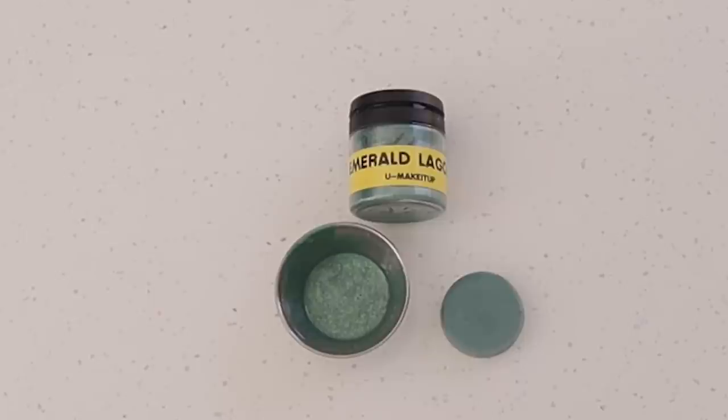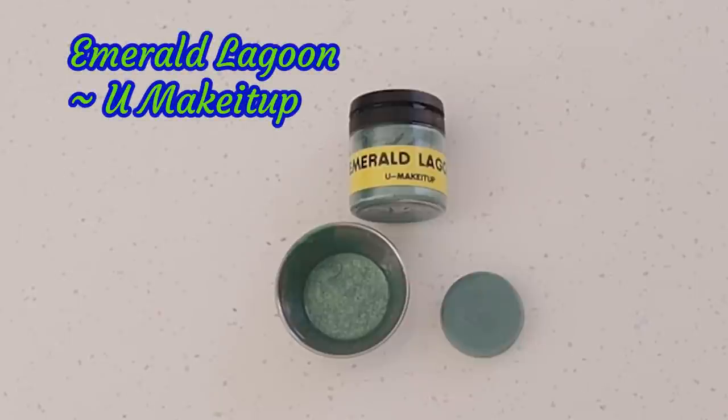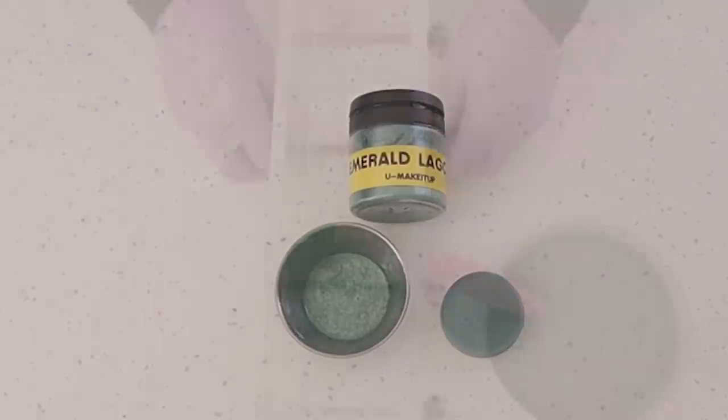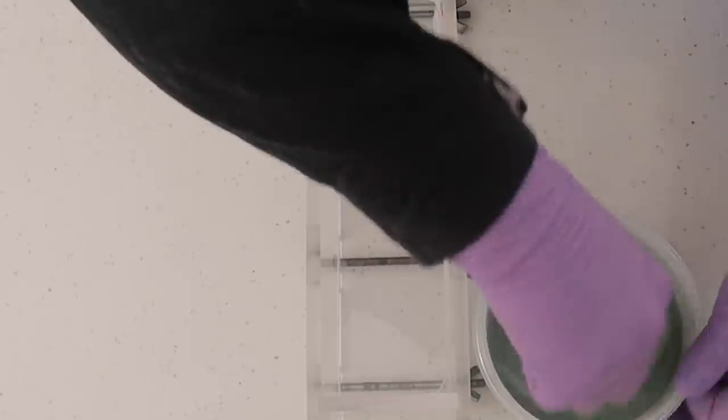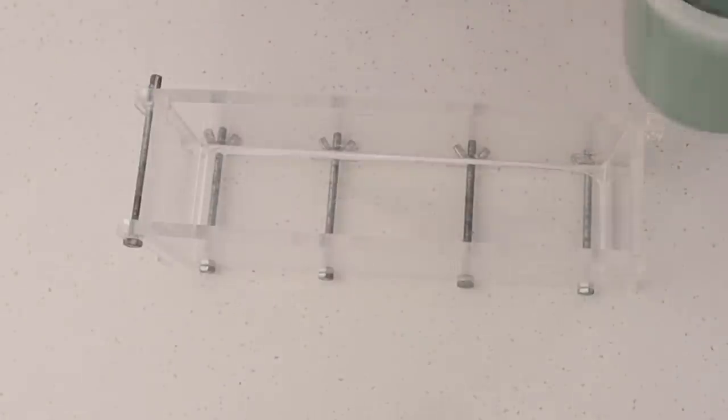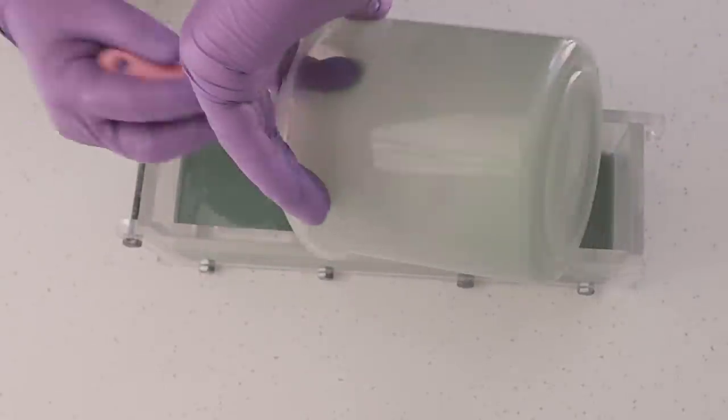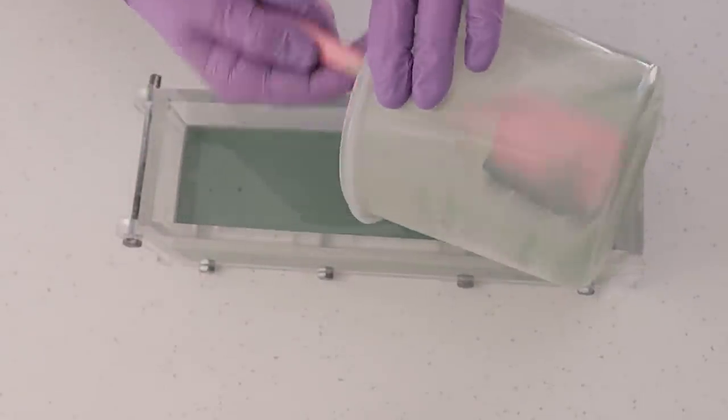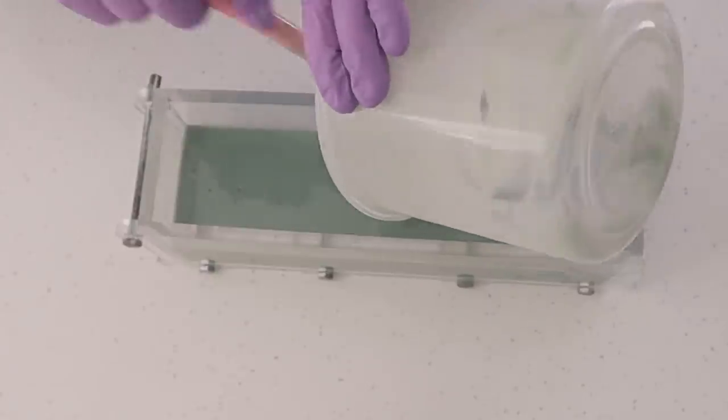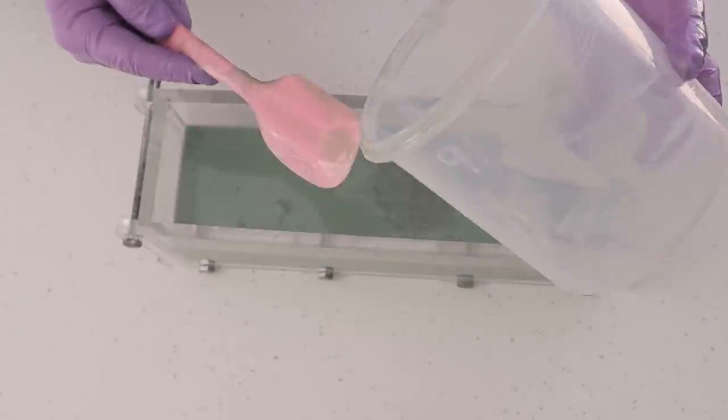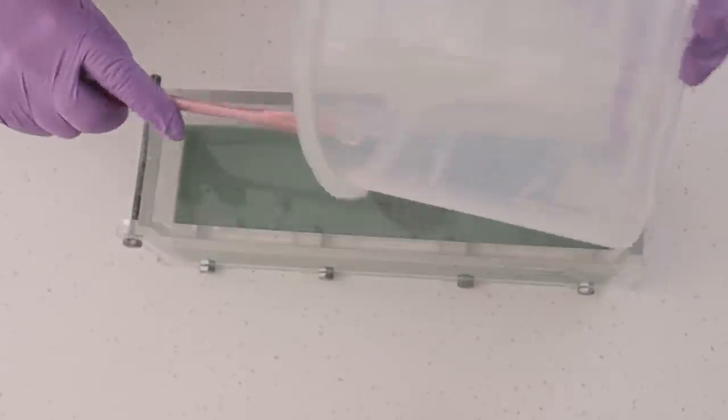For this soap I'm going to be making some embeds the day before I make the main soap. I need some leaves and some stems so I'm going to be using Emerald Lagoon from You Make It Up and all I'm going to do is literally make a simple single block of solid colored soap and then I'll let that saponify overnight as normal and then from that I'm just going to cut off the bits that I need to turn into my leaves and stems.